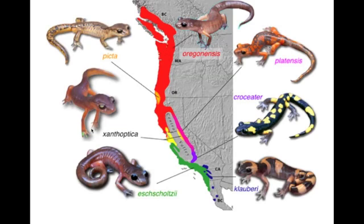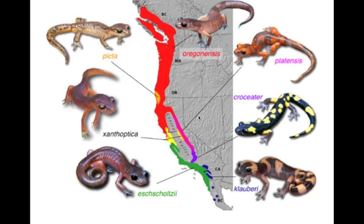Another example of a ring species is Ensatina salamanders, found on the west coast of America. These are a ring species because the salamander Picta is able to breed successfully and have fertile offspring with its neighbours, and possibly those slightly further away. But as you move further from the original population, the variation between the salamanders gradually increases — probably because of differences in the geography of the two areas. For instance, one salamander may have mutated to be better camouflaged in a forest area, while another may have grown smaller with less pattern because it inhabits a more desert-like area.